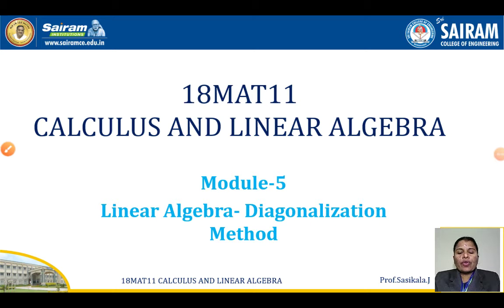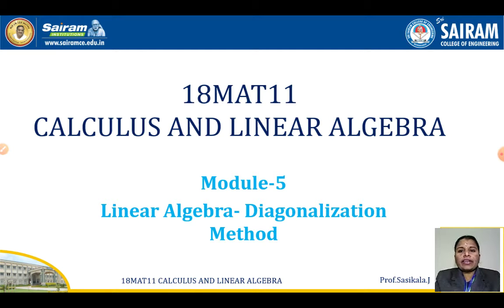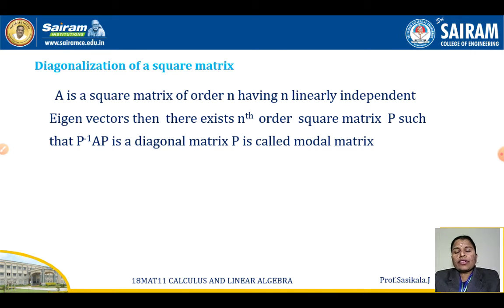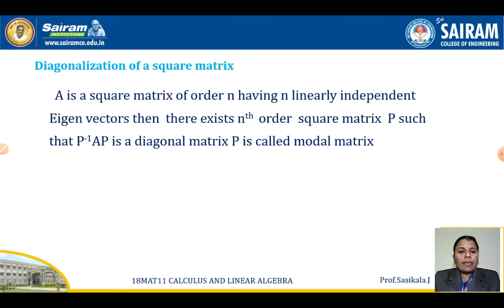In this video we are going to see the method of diagonalization in linear algebra. Diagonalization is a method of making a diagonal matrix. If A is a square matrix of order n having n linearly independent eigenvectors, then there exists an n-order square matrix P such that P inverse AP is a diagonal matrix. P is called the modal matrix.